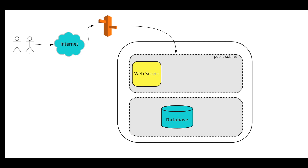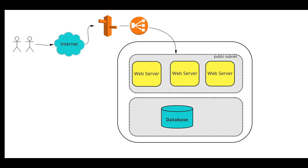As your application gets more attention and there is more traffic coming into your environment, you manually spin up multiple web servers, then to handle the traffic you create an Elastic Load Balancer that balances traffic across the multiple web servers, and then to scale the capacity you configure an Auto Scaling Group and have your web servers in that Auto Scaling Group.